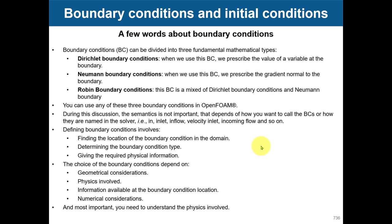When it comes to boundary conditions, it can be a little bit confusing because there are many options. As I say in the first tutorial, just think about Dirichlet, Neumann, and Robin conditions — that's all. Think about the mathematical type and then try to find the numerical one in OpenFOAM that best fits what you want to do. There are just a few of them that you will need to use.